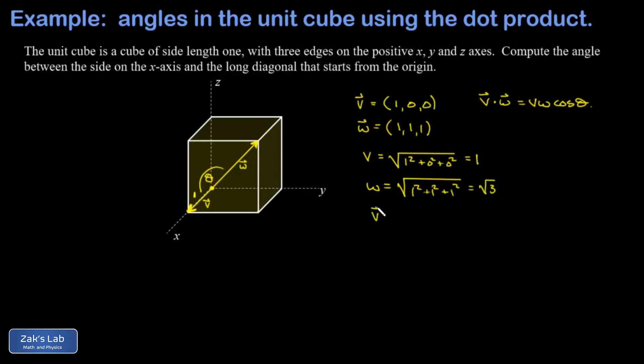Now we also need to find the dot product between these two vectors. That's just the sum of the products of their components. I get 1 times 1 for the product of x components, and then the rest vanish: 0 times 1 for the y components and 0 times 1 for the z components. So the dot product equals 1.